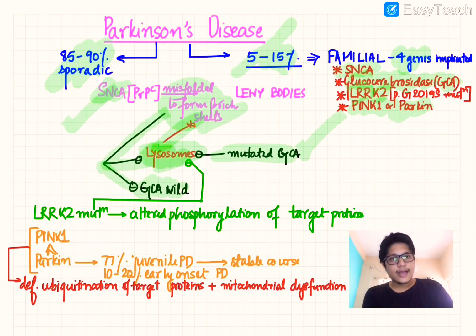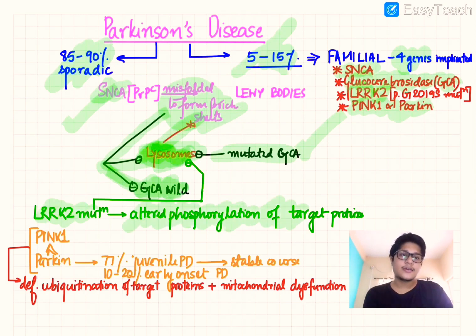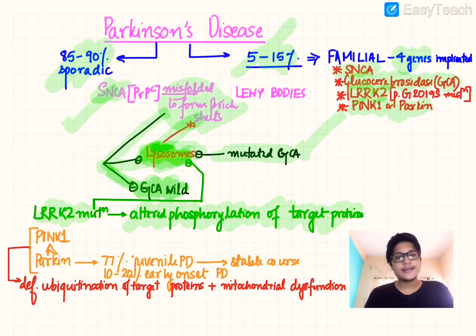In isolated SNCA mutations there will also be inhibition of lysosomes and inhibition of the normal GBA gene function. For LRRK2 mutations there is altered phosphorylation of target proteins due to activation of kinases, so kinase inhibitors are being tried for treatment of Parkinson's disease, particularly in patients with the LRRK2 p.G2019S mutation — though so far they have shown high toxicity.